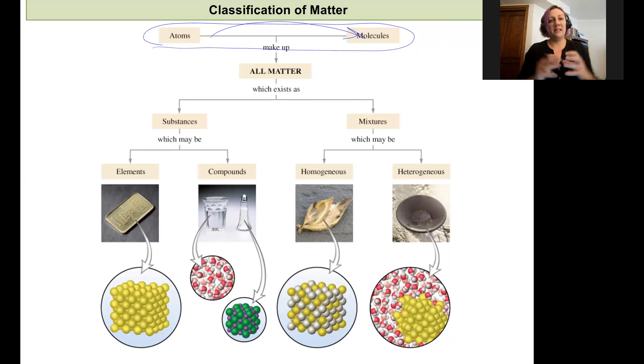Of all of that matter that exists out in the world, we have two categories we could split them up into: substances and mixtures. A substance is going to be something that we think of as being pure. It is only one thing. If we think about this for atoms, just one atom and a lot of it together as a substance would be an element. Our example here is the element gold. We would have, for a piece of gold, a whole bunch of gold atoms and nothing else.